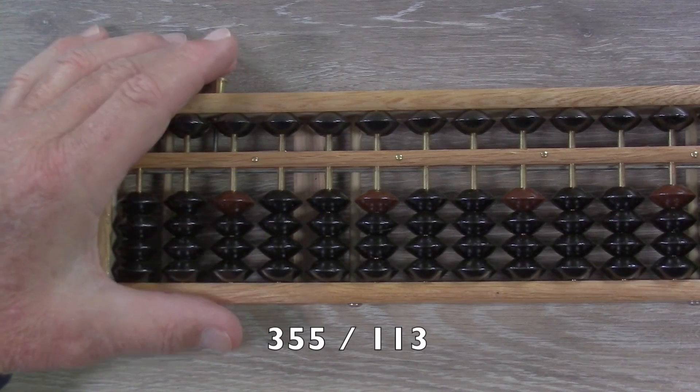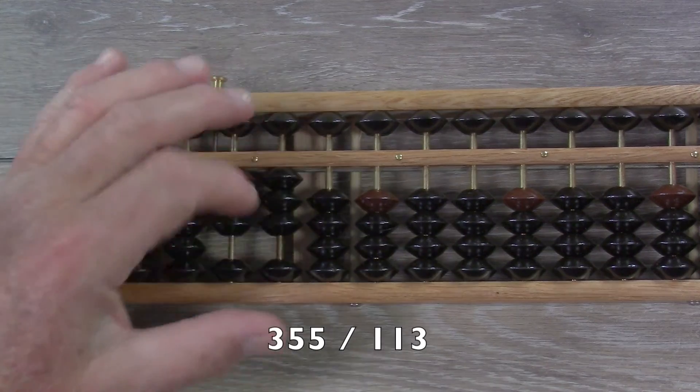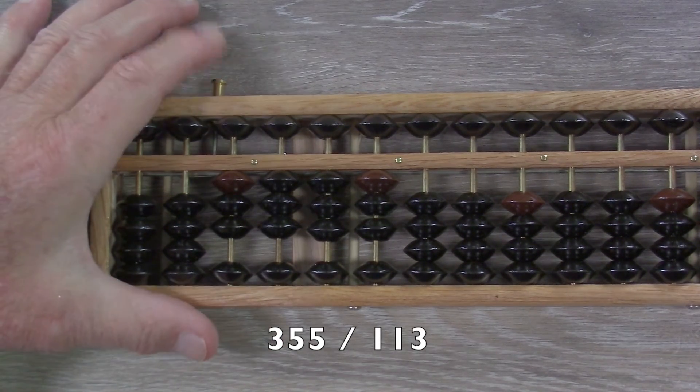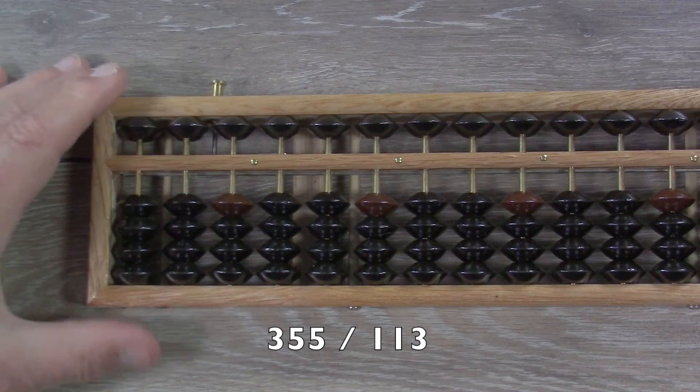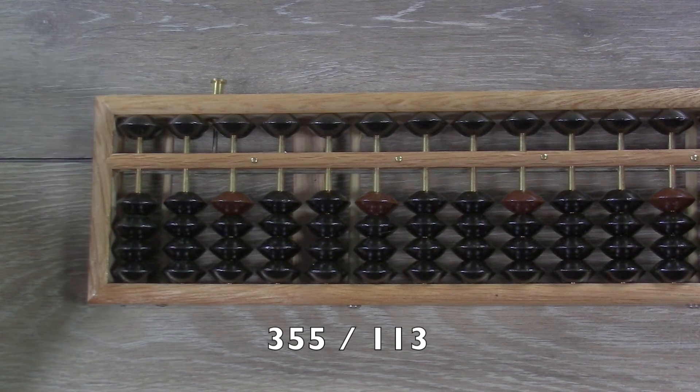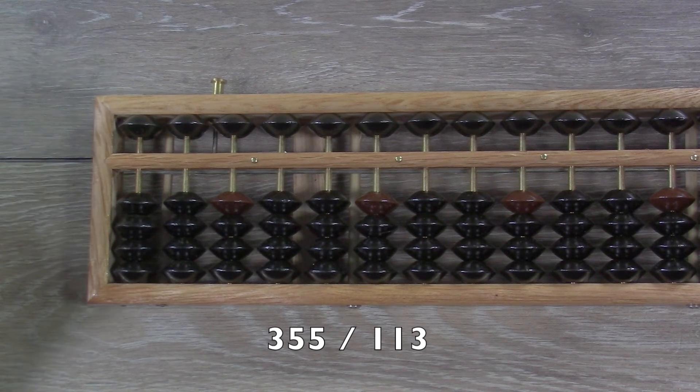Okay, so we're going to use this modern 1-4 Soroban for our practice problem here of division, and it has the automatic clearing button, which is kind of handy. So, we're going to do a problem with 355 divided by 113. That's the same problem we did on the pinwheel calculator.